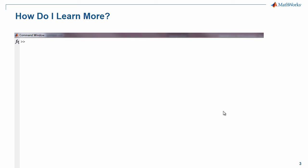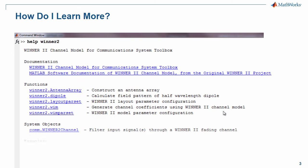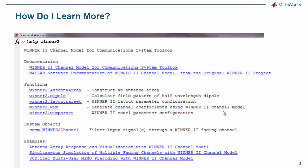So with this introduction you might ask how do I learn more? After you download and install the add-on type help winner2 at the MATLAB command line and you will get this listing of documentation, functions, system objects, and examples to help you understand what Winner can do and how you can use it. The examples are particularly instructive for the new user.